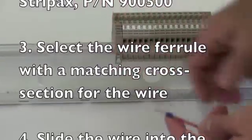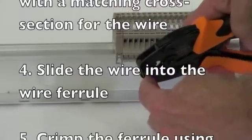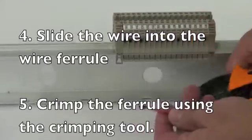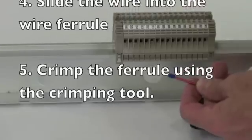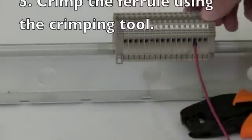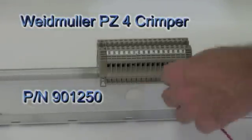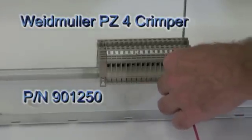Select the wire ferrule with the matching cross section for the wire. Slide the wire into the wire ferrule. Crimp the ferrule using the crimping tool. The tool I am using here is a Weidmuller PZ4 crimper, part number 901250.